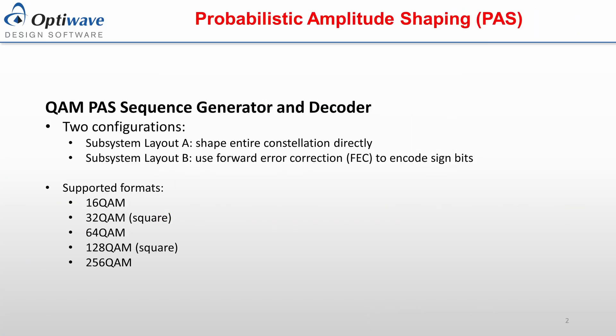The QAM pass sequence generator and decoder components use the probabilistic amplitude shaping technique to lower the entropy of a QAM signal, which can be used for various reasons such as lowering the average power of an optical signal or changing the baud rate under a constant bitrate.